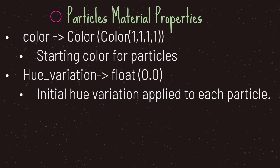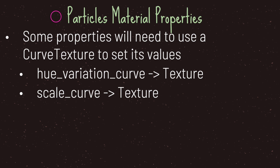The color property is the starting color for your particles. On top of that, you have a hue variation property, which sets the initial hue variation applied to each particle. You use hue variation when you want to apply different colors over the lifetime of each individual particle. Some properties will need to use a CurveTexture resource class to set their value — for example, the scale curve and the hue variation curve. Any property in the ParticlesMaterial class that has 'curve' appended at the end will most likely need to use a curve texture.